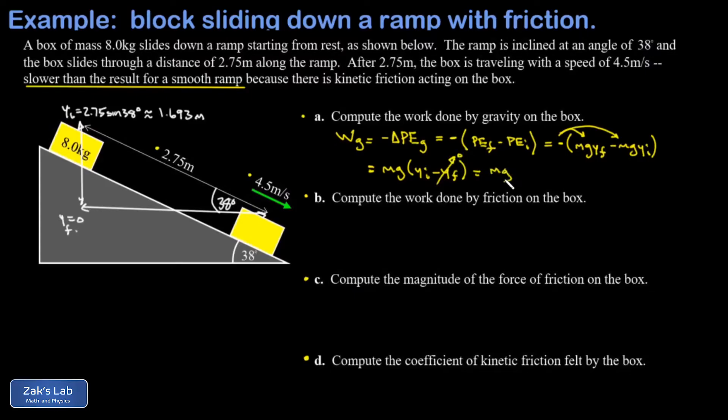And the work done by gravity is going to be mg y initial. I'll plug in my numbers: eight kilograms, we're using 9.8 for g, y initial was 1.693 meters. Into three sig figs I get 133 joules of work. Again, that's got to be positive. When an object is decreasing in height, gravity is doing positive work causing the kinetic energy to go up.